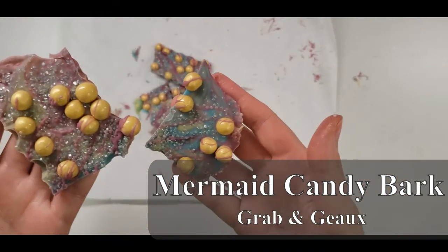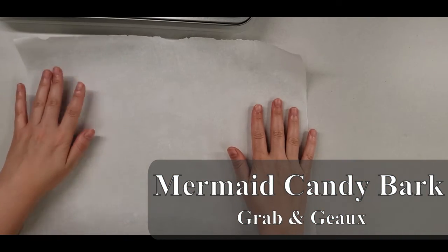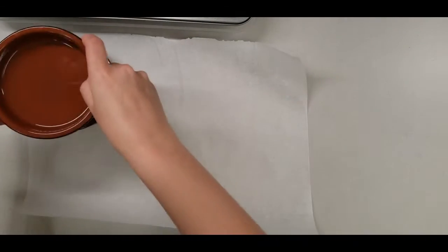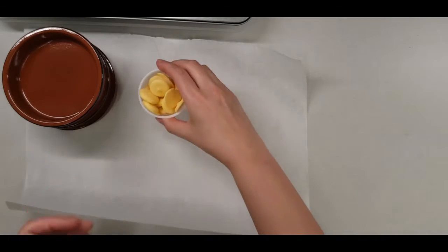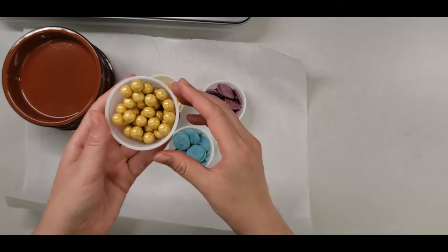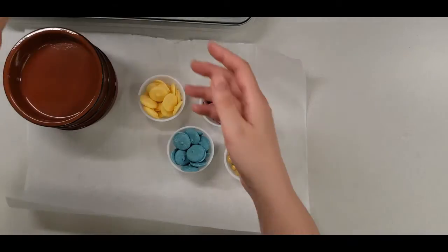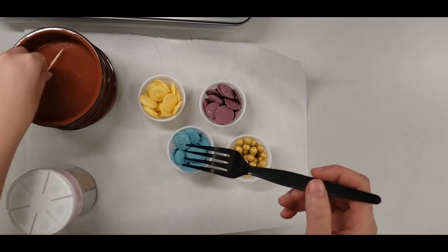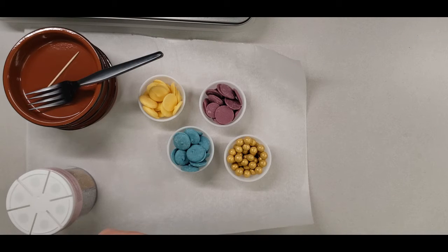The materials you will need for today are a piece of parchment paper, microwave safe containers, white candy melts, purple candy melts, teal candy melts, gold chocolate pearls, sprinkles, a toothpick or a fork, and a microwave.